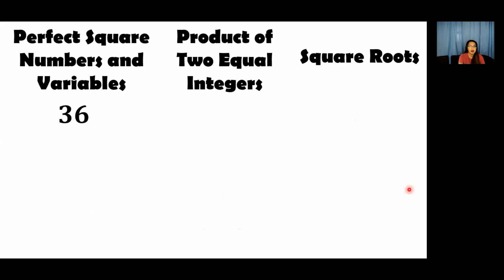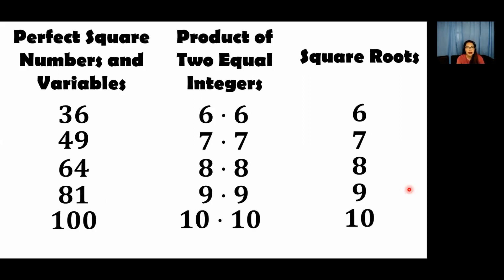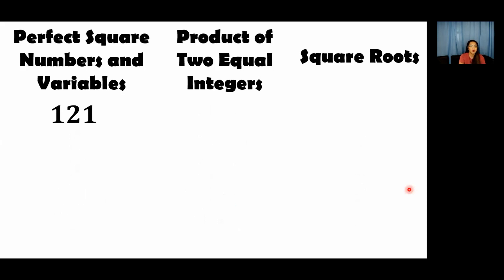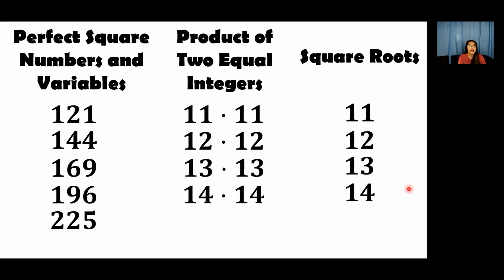We have more examples: 36 — square root is 6; 49 — square root is 7; 64 — square root is 8; 81 — square root is 9; 100 — square root is 10; 121 — square root is 11; 144 — square root is 12; 169 — square root is 13; 196 — square root is 14; and 225 — square root is 15. And there are many more. You can list the perfect square numbers whose square roots are 16 and above, but I will not include those here in our video.